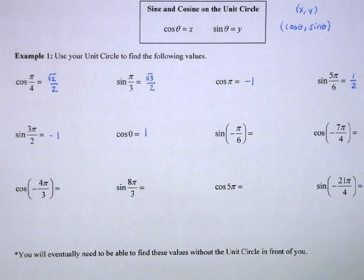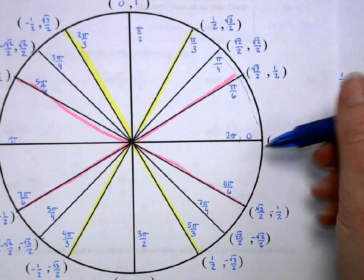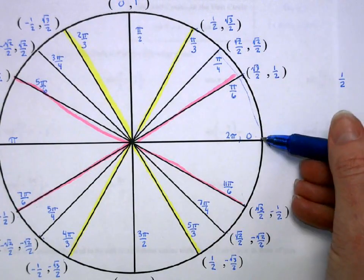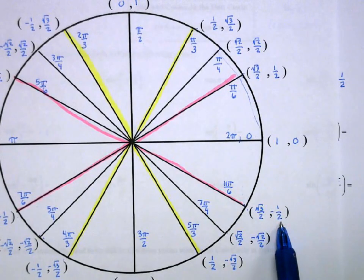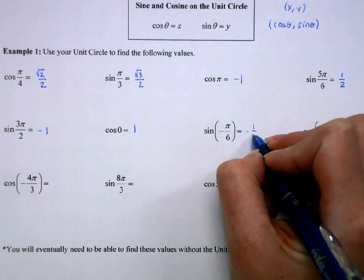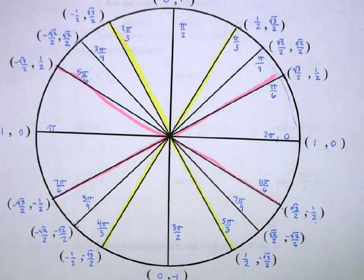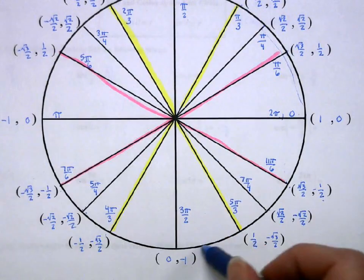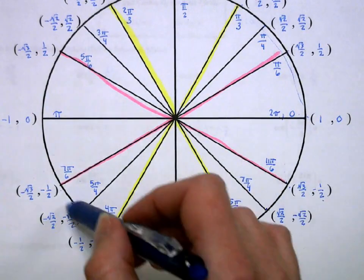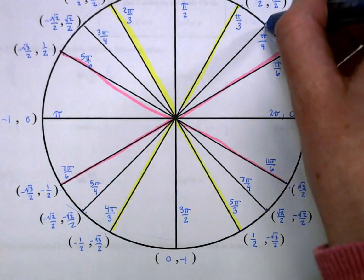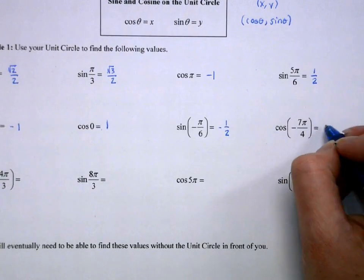Sine of −π/6: when we have a negative angle, we measure going clockwise instead of counterclockwise. The positive π/6 is above the x-axis, so −π/6 is its reflection below. For sine we take the y-coordinate, which is −1/2. Cosine of −7π/4: going 7/8 of the circle clockwise ends up at +π/4, so the x-value is √2/2.